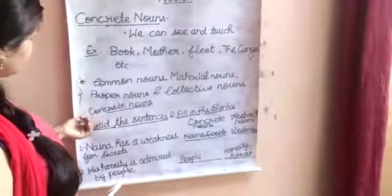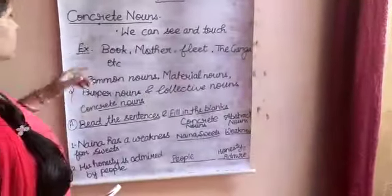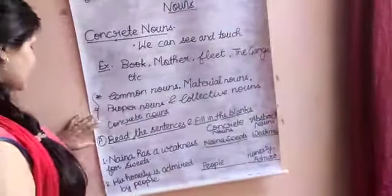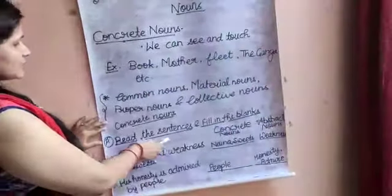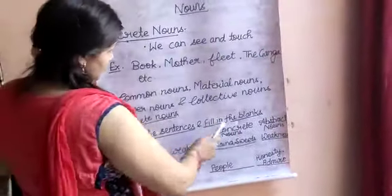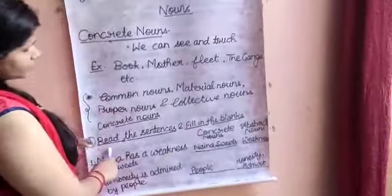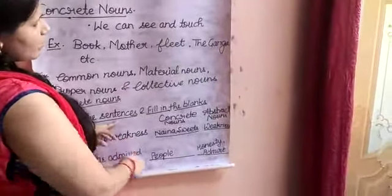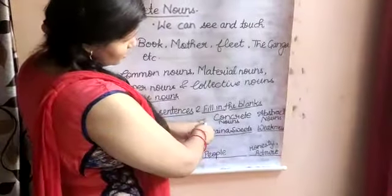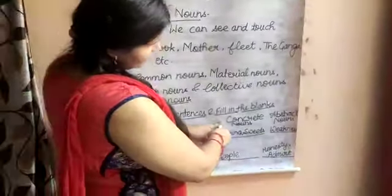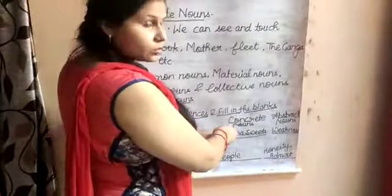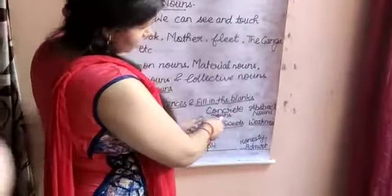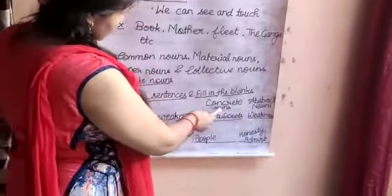Now, this means the Concrete Noun. So it's a related exercise. Read the sentences and fill the blanks. Here you can read sentences, and on the second side there are two columns — one is Concrete Noun and another is Abstract Noun.